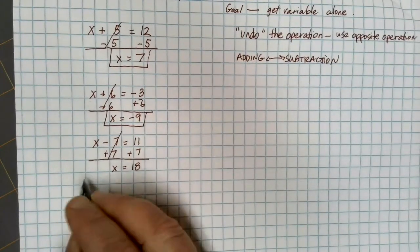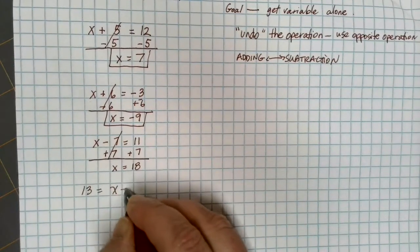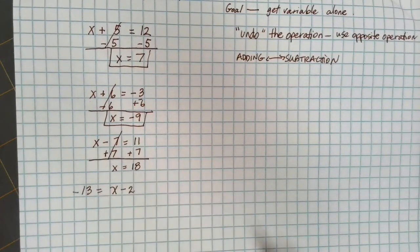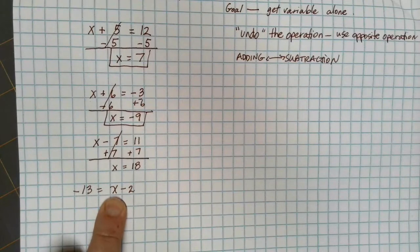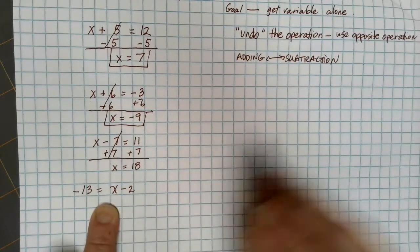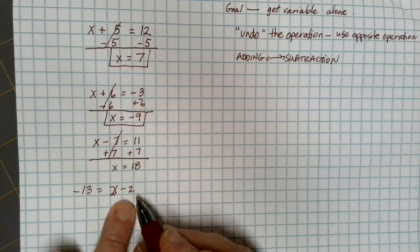A few other things just to keep in mind. It doesn't matter which side of the equation your x variable is. The goal is always to get the x variable alone. So in this case, if I'm looking at the x, what's causing me trouble is the fact that the 2 is being subtracted from it.